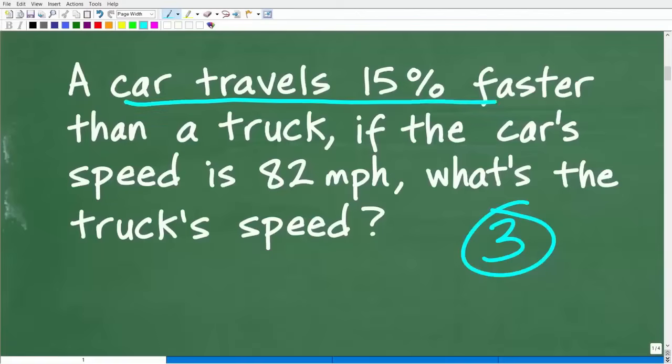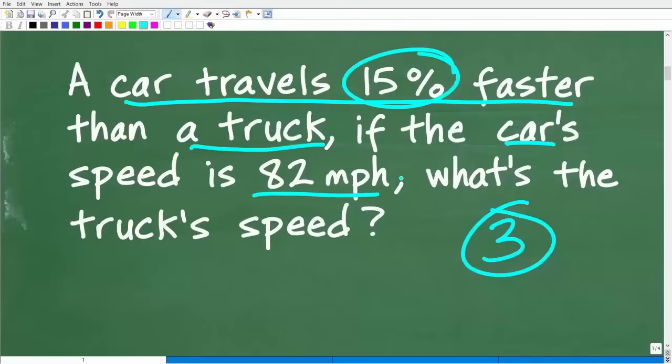So this car travels faster than a truck. In fact, it travels 15% faster than a truck. And the car's speed is 82 miles per hour. We're looking for the truck's speed. So let me just ask you, intuitively speaking, do you think the truck is going to be going slower or faster than the car? Well, if the car travels faster, then obviously the truck's speed will be less than 82 miles per hour.